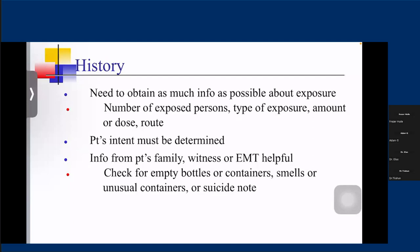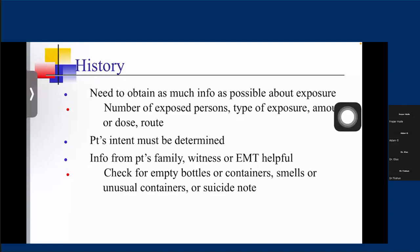If it is difficult to get history from the patient, we need to proceed to collateral history — from the family, any witness person, or from EMS. We can check for empty bottles, containers, and even check for the smell on the patient, unusual containers found close with the patient. If possible, also look for any suicide note, as some patients write one before committing suicide.